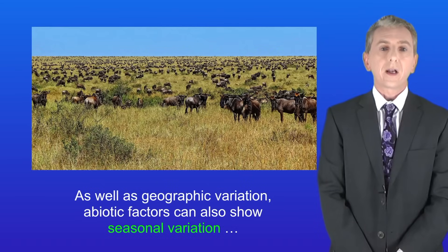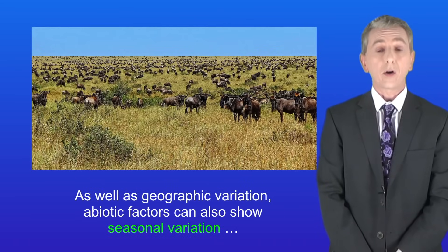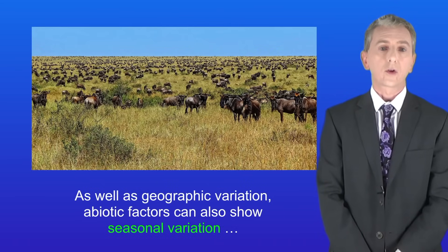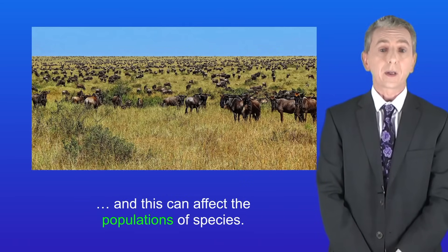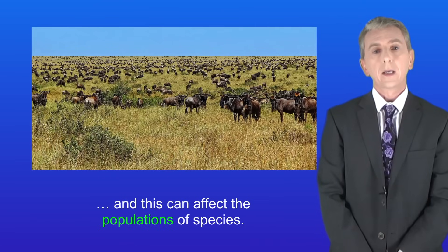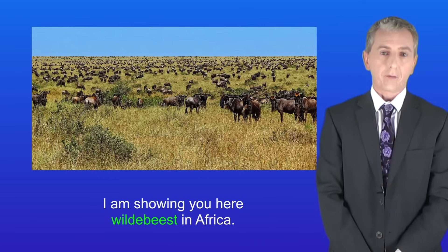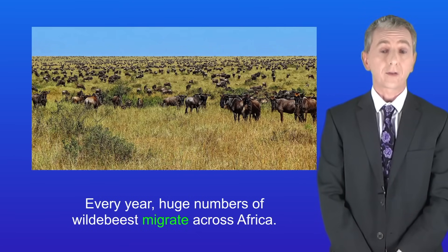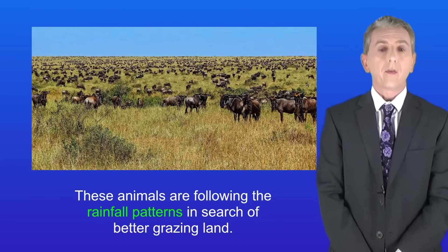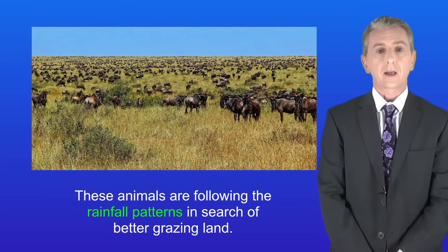As well as geographic variation, abiotic factors can also show seasonal variation, and this can affect the populations of species. For example, every year huge numbers of wildebeest migrate across Africa, following rainfall patterns in search of better grazing land.